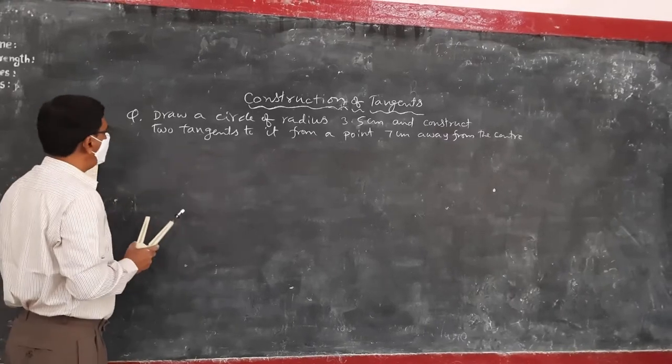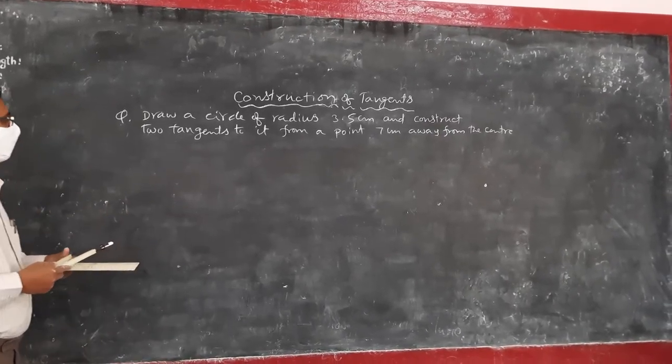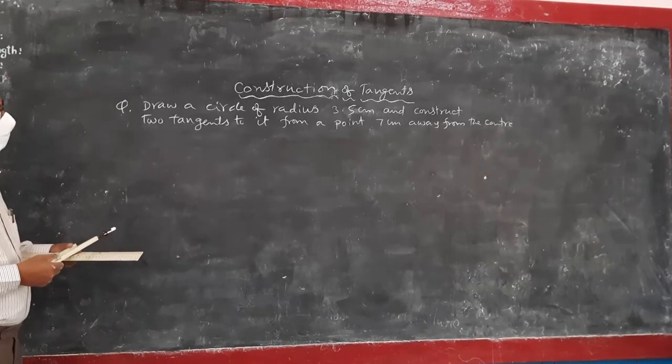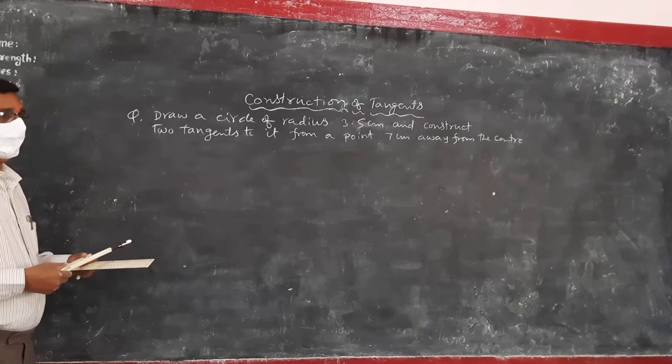First question. Draw a circle of radius 3.5 cm and construct two tangents to it from a point 7 cm away from the center.